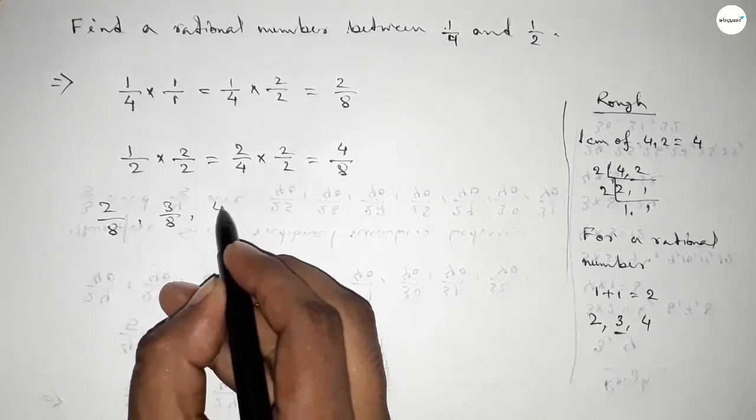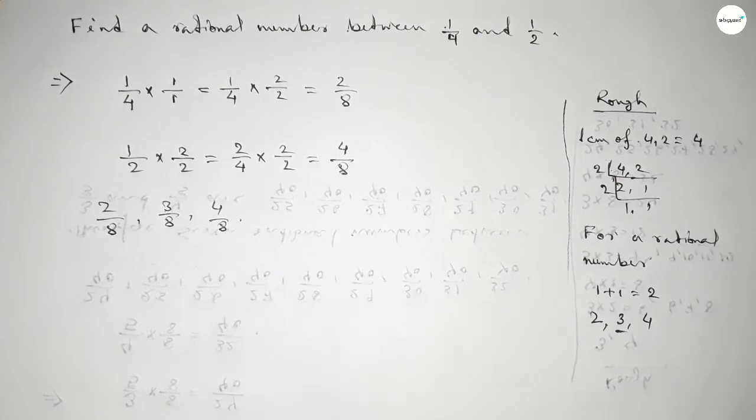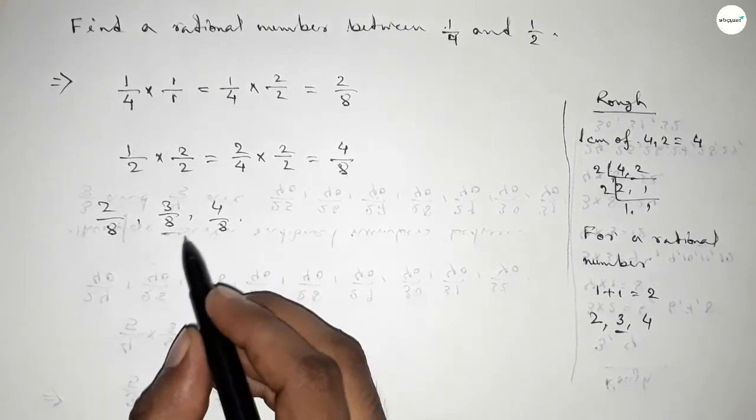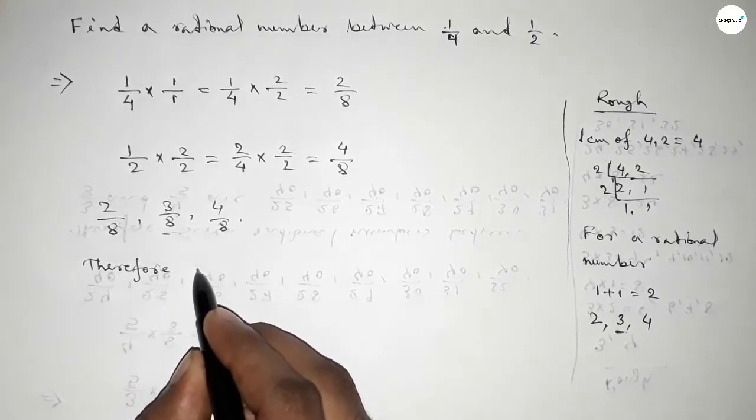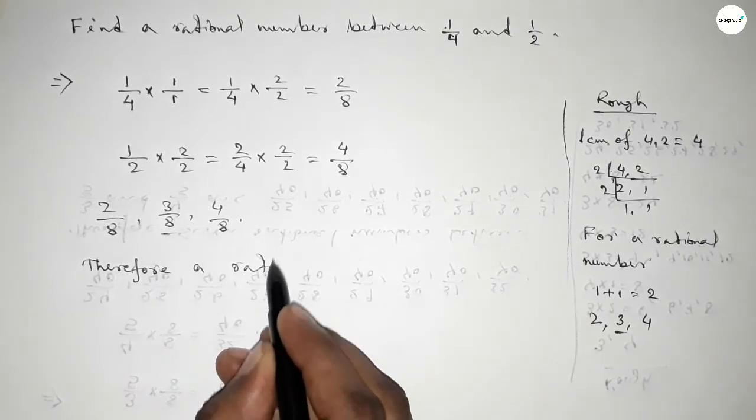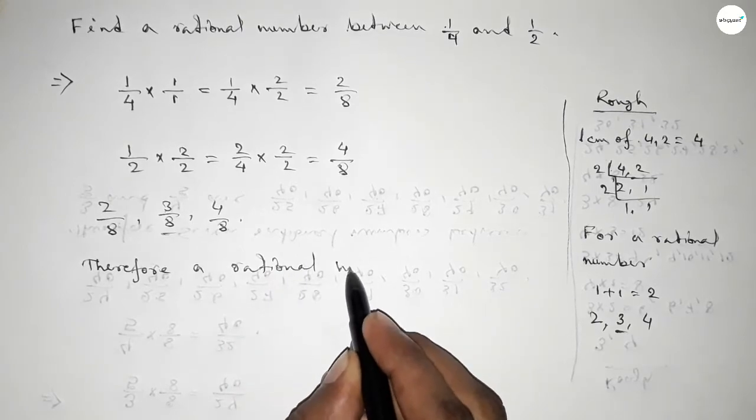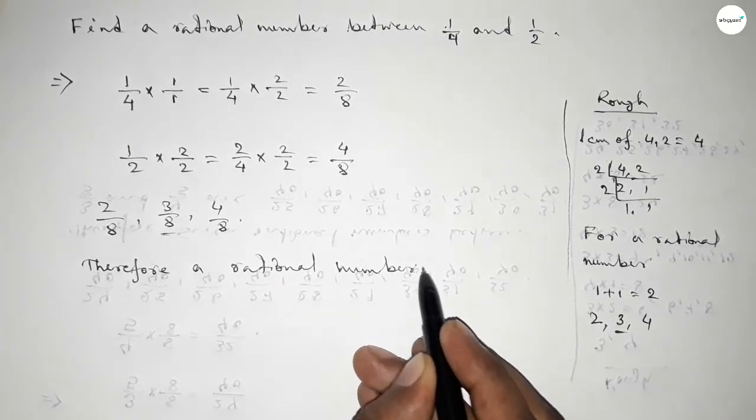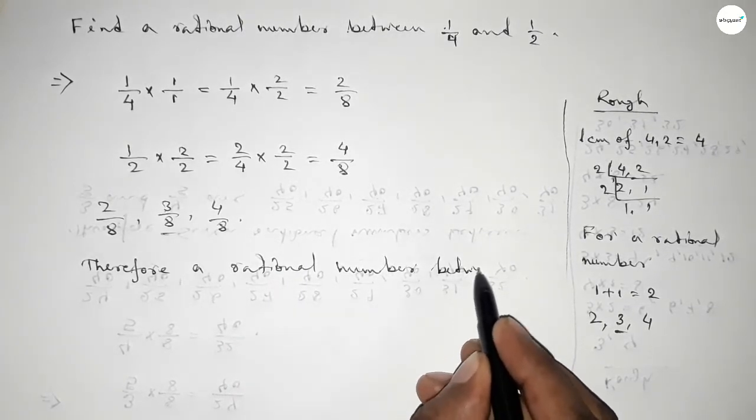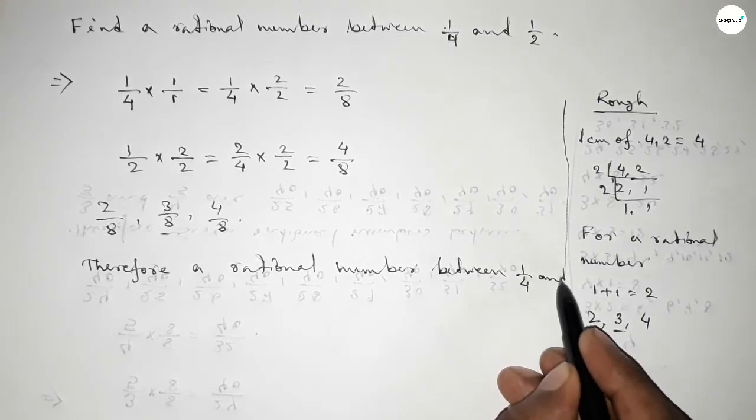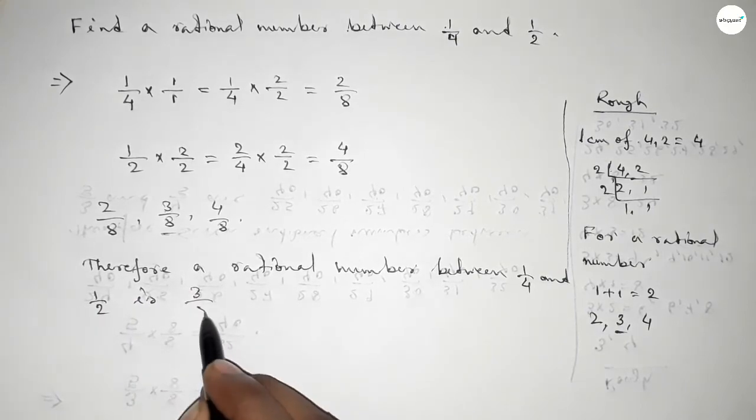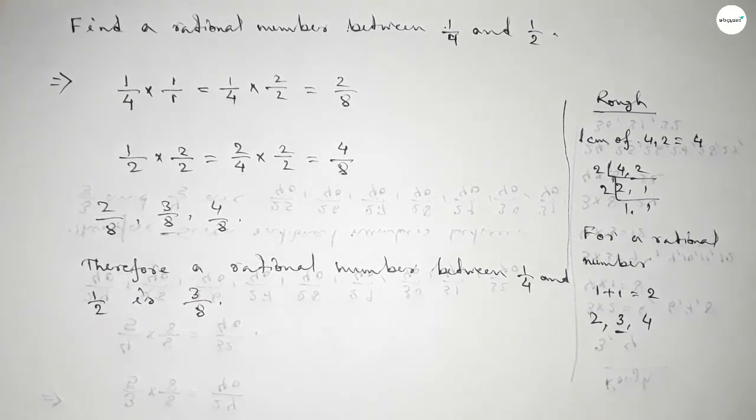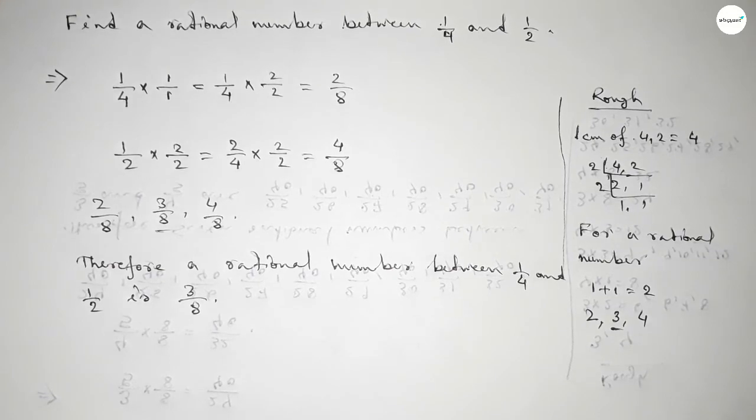Among these, this is the required rational number between 1 over 4 and 1 over 2. Therefore, a rational number between 1 over 4 and 1 over 2 is 3 over 8. That's all, thanks for watching. If this video is helpful, then share it with your friends.